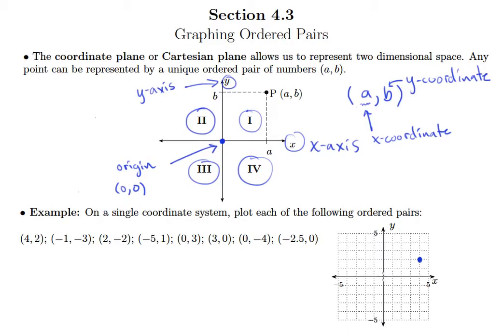Next, (-1, -3). Negative means I go left 1 from the origin, and negative 3 means I go down 3 in the y-direction. Then (2, -2): I go 1, 2 in the x, and then down 2 in the y, putting us right there.